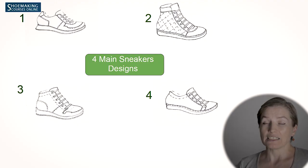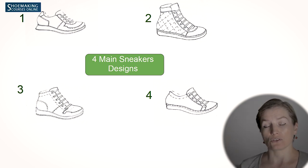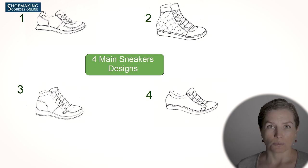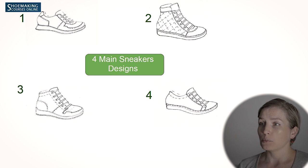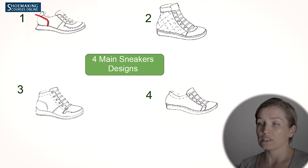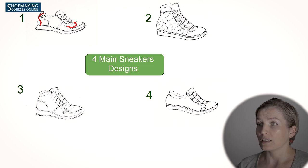When you know how to do all these constructions, you will be able to create unlimited designs. Because inside of the structure — derby construction, Oxford construction, low top, high top — you can change your design and add unlimited elements. Inside these four different shoe types you will be able to design whatever you want. For example, I can change the shape of this line, create sneakers without this detail in the back, change this line, or continue it with a strap like this.